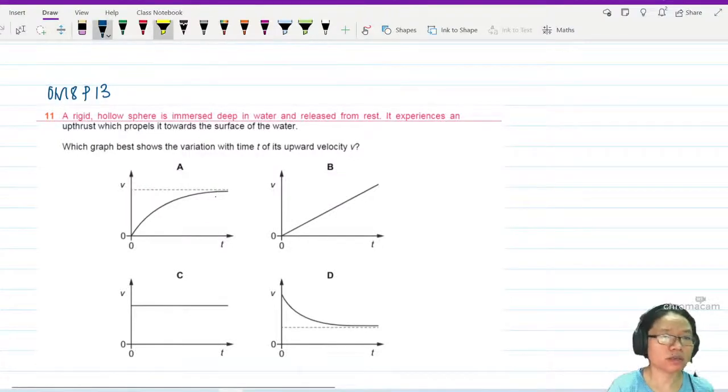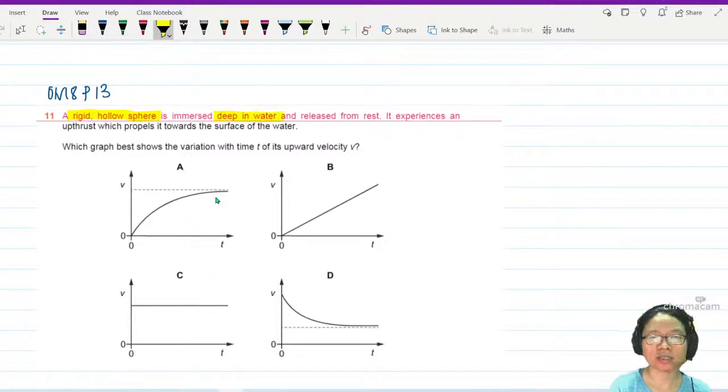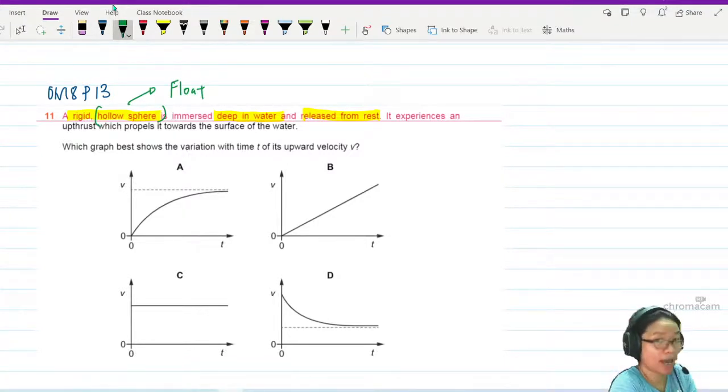A rigid hollow sphere is immersed deep in water and released from rest. My dudes, if the sphere is hollow, it's probably going to float. I don't care what material it's made out of, hollow means the center is air. Air is low density, it's probably going to float. It experiences an uptrust which propels it towards the surface of the water.